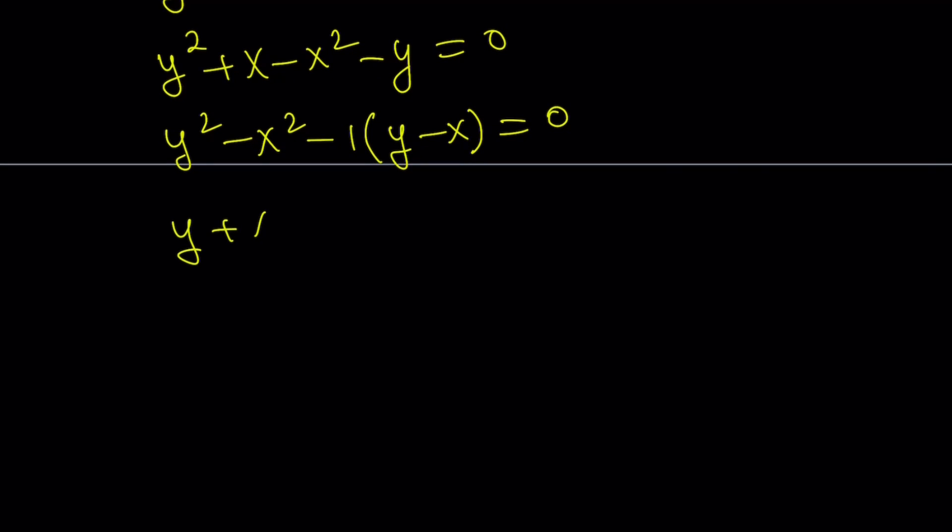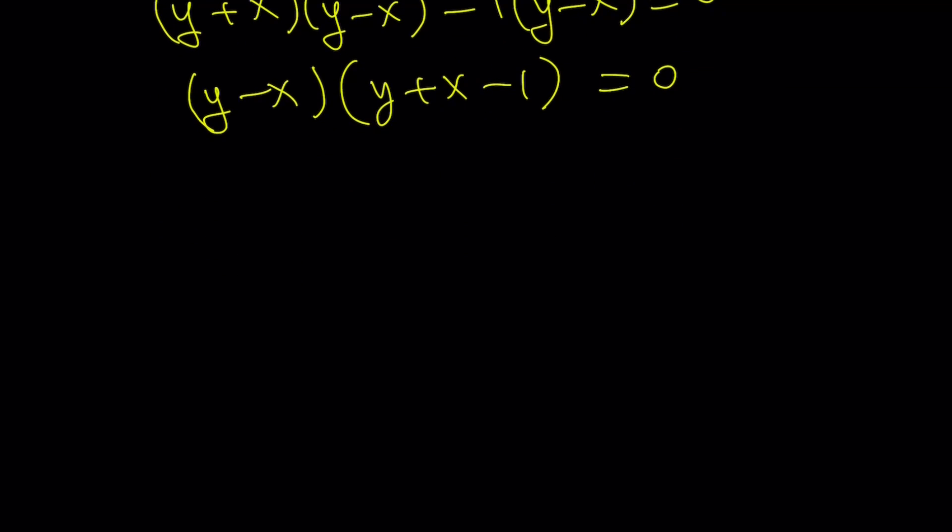Now, y² - x² is factorable by difference of two squares: (y + x)(y - x). Therefore, we get a common factor. And from here, we take out (y - x), and we get two factors. And these two factors give us the same quadratic equations. Let me show you real quick how.